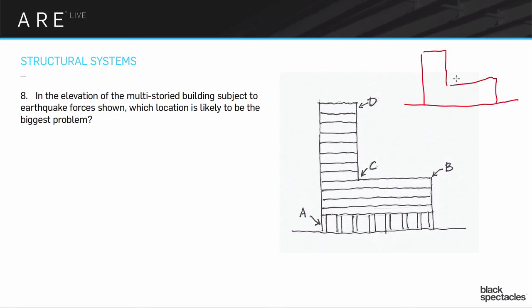And in that question on the NCARB mock exam, the point that you are most worried about—so the question is, in the elevation of a multi-story building subject to earthquake forces, this elevation that's shown, which location is likely to be the biggest problem? So on the NCARB version of it, that spot right there, the C one would be the correct answer.